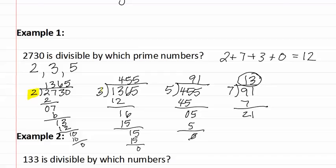We found two, three, and five using the tests, and we additionally found seven and thirteen using long division. That means 2730 is divisible by two, three, five, seven, and thirteen.